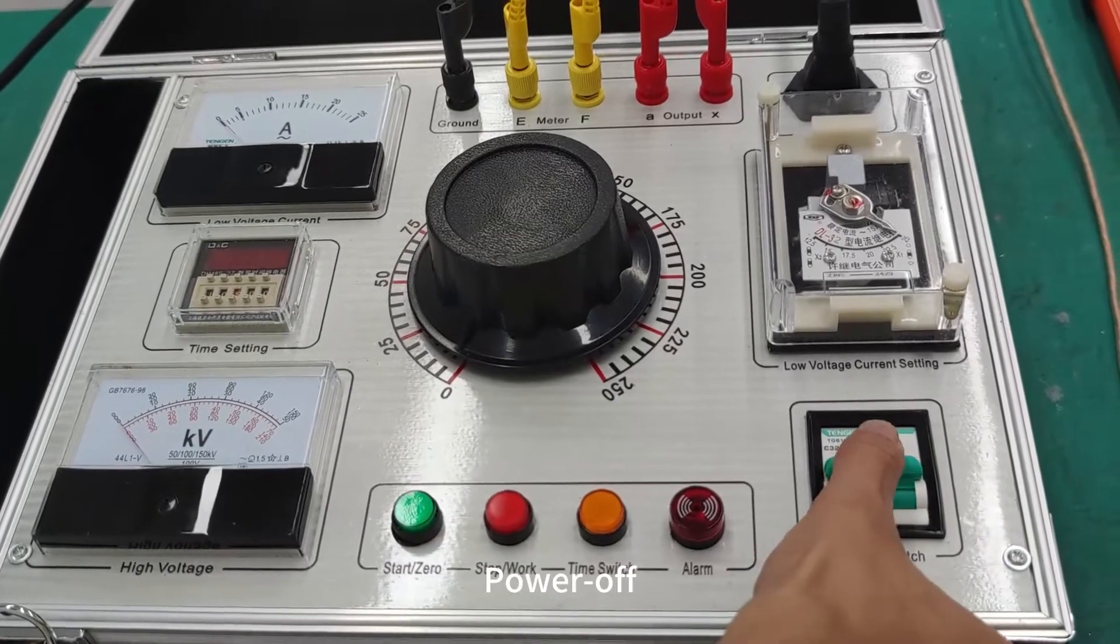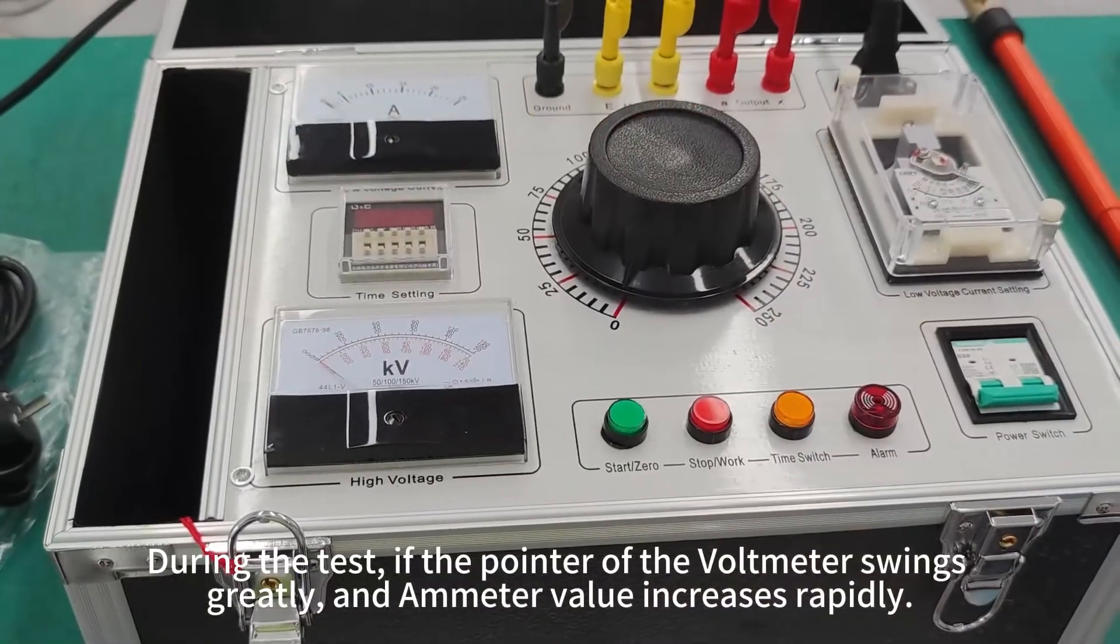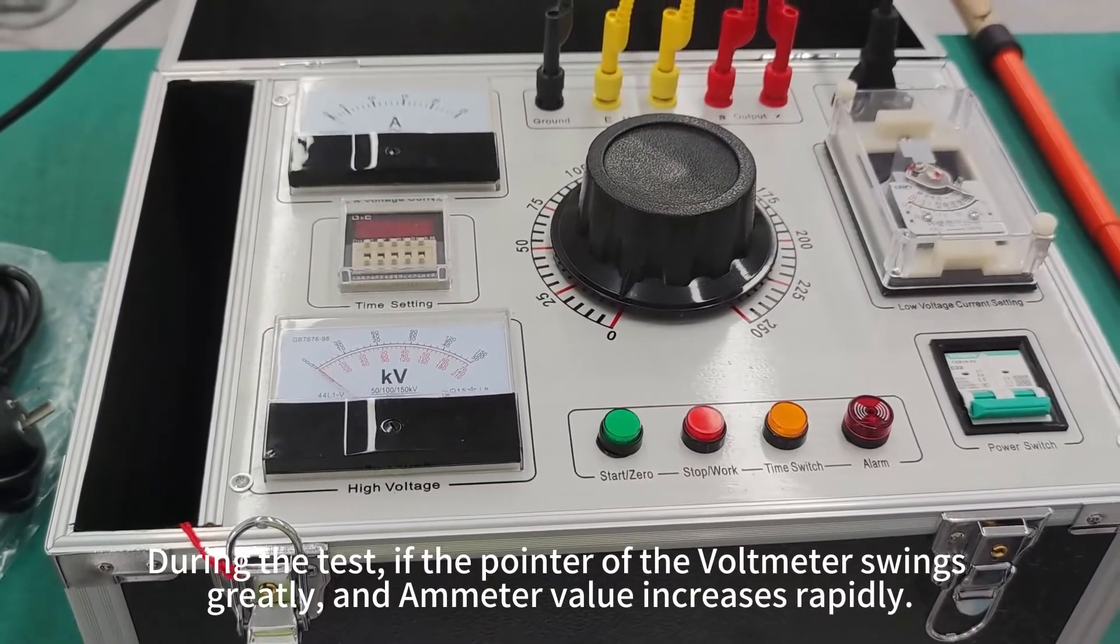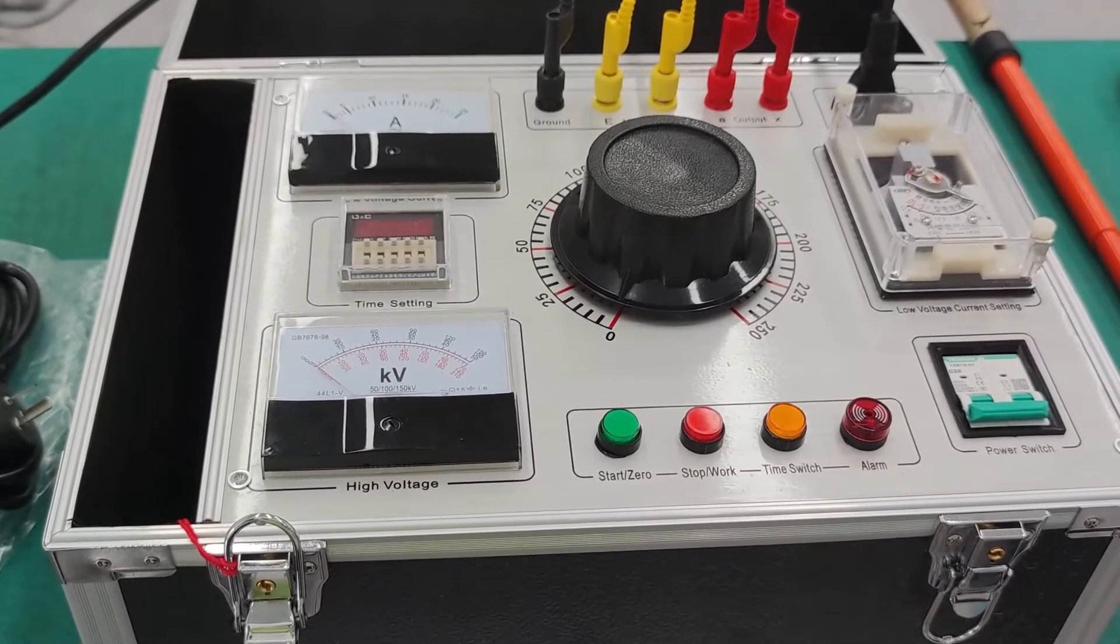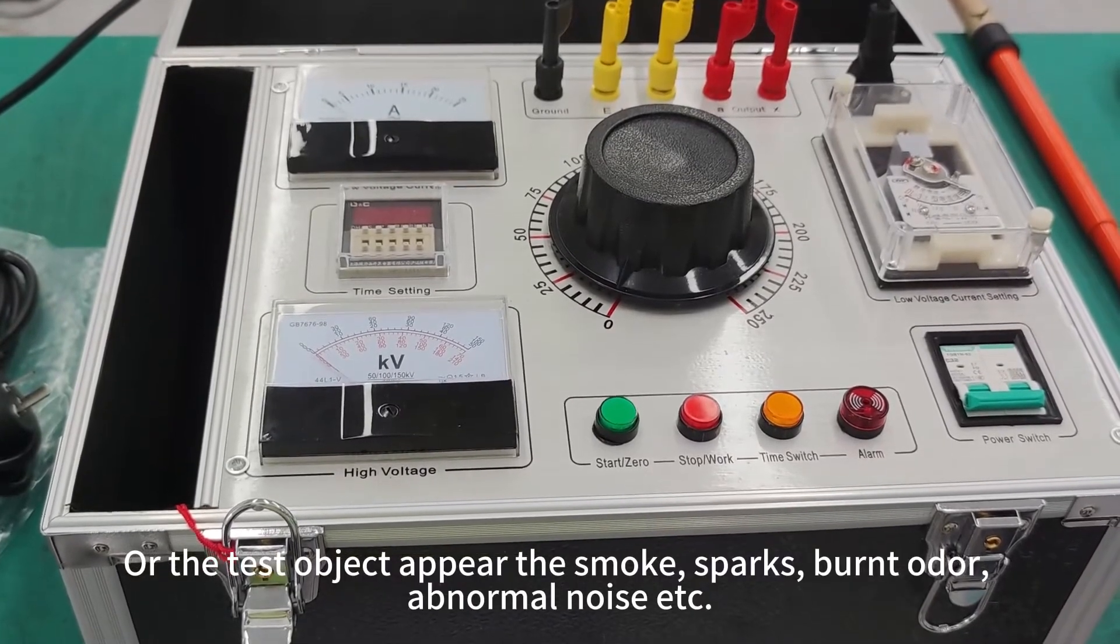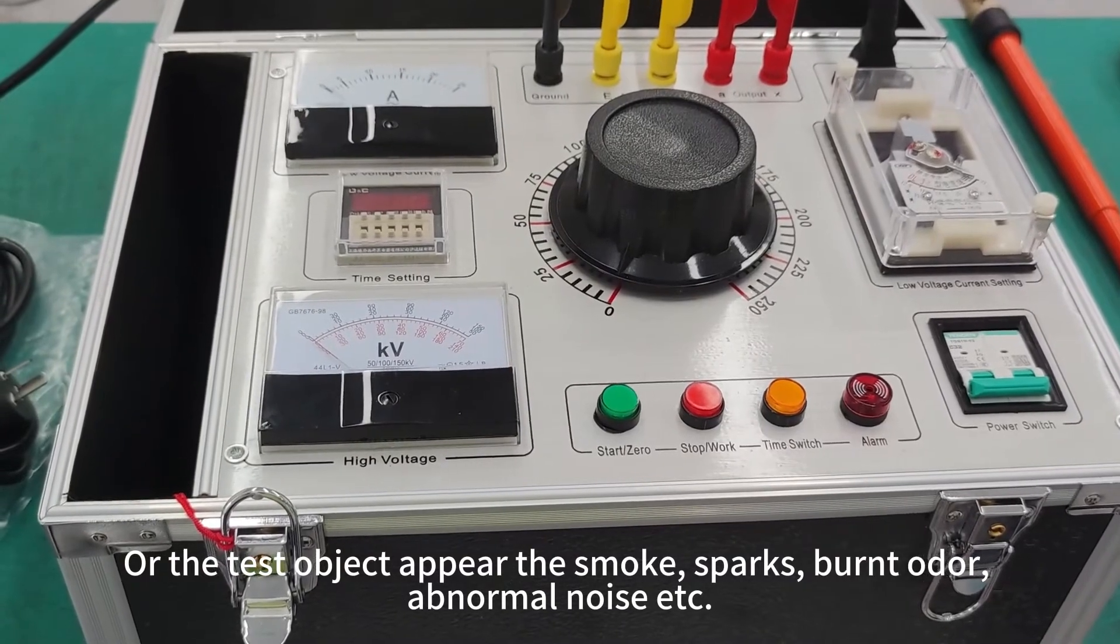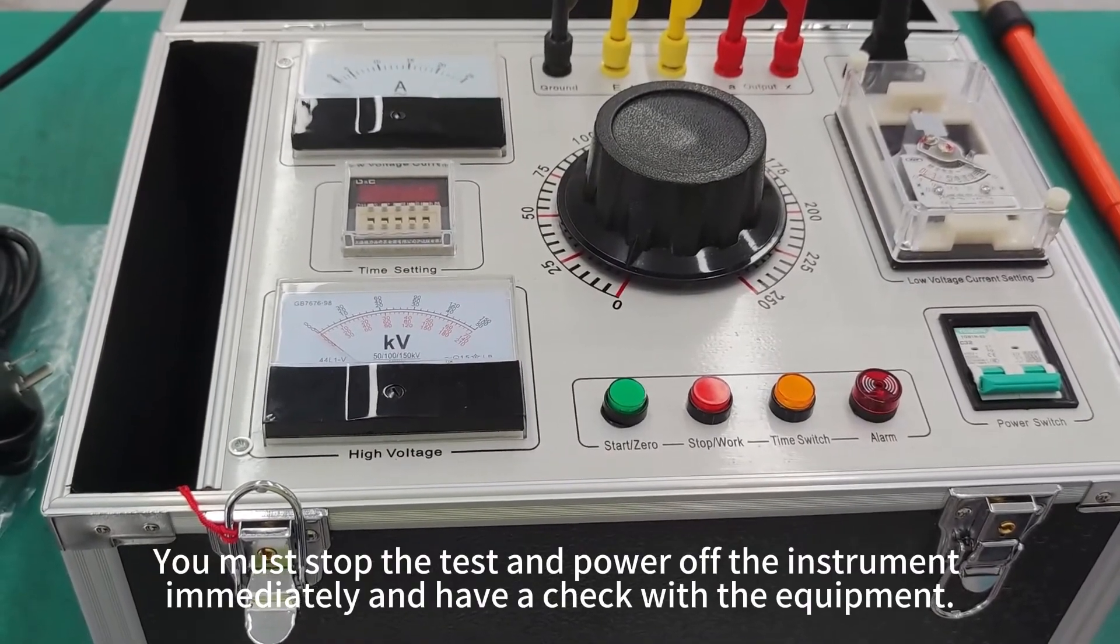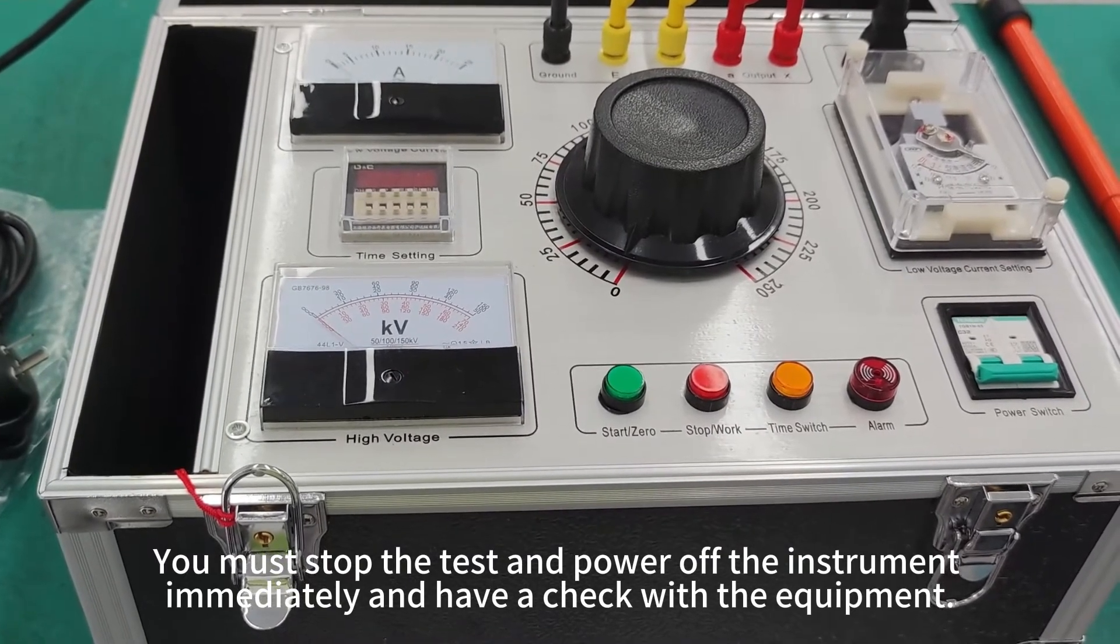Power off. If the pointer of the voltmeter is swinging greatly and meter value increases rapidly, or the test object appears smoke, sparks, burnt odor, or abnormal noise, you must stop the test and power off the instrument immediately and check the equipment.